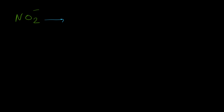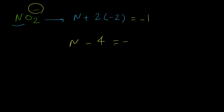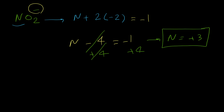Now let's find the oxidation number for nitrogen in nitrite, NO2^-1. We don't know nitrogen's value, so we write N. There are 2 oxygen atoms, each with oxidation number -2, so 2 times -2. The total must equal the charge of the ion, -1. So N + (2 × -2) = -1, meaning N - 4 = -1. Adding 4 to both sides gives nitrogen = +3. The oxidation number for nitrogen in nitrite is +3.